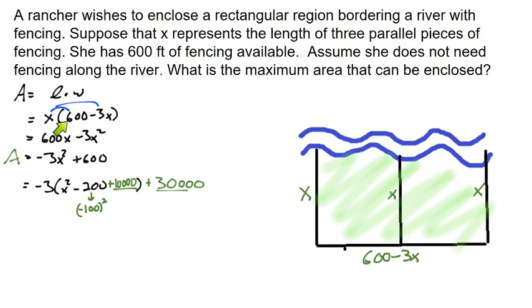Now what we've done is we've rewritten our quadratic function. My last step to get into vertex form is to write this little trinomial in its factored form. So negative 3 times x minus 100 squared plus 30,000. So we have our h and our k.